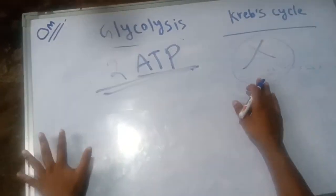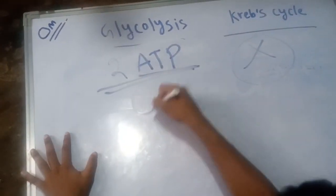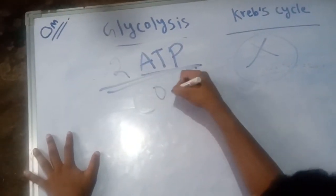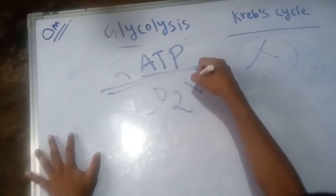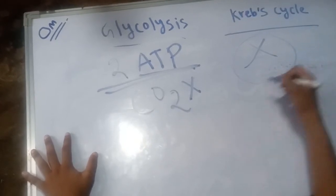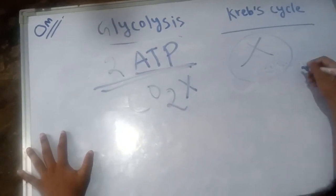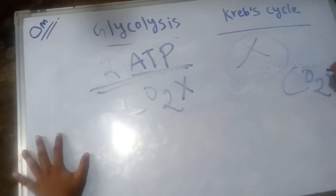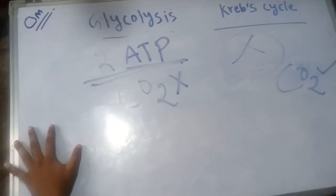The fifth difference: in the case of glycolysis, it does not produce carbon dioxide. But in the case of Krebs cycle, it produces carbon dioxide.